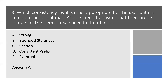Question 8. Which consistency level is most appropriate for the user data in an e-commerce database? Users need to ensure that their orders contain all the items they placed in their basket. Option A: Strong. Option B: Bounded Staleness. Option C: Session. Option D: Consistent Prefix. Option E: Eventual. Azure Cosmos Database allows developers to choose between five well-defined consistency models along the consistency spectrum. The right answer is Option C: Session consistency.